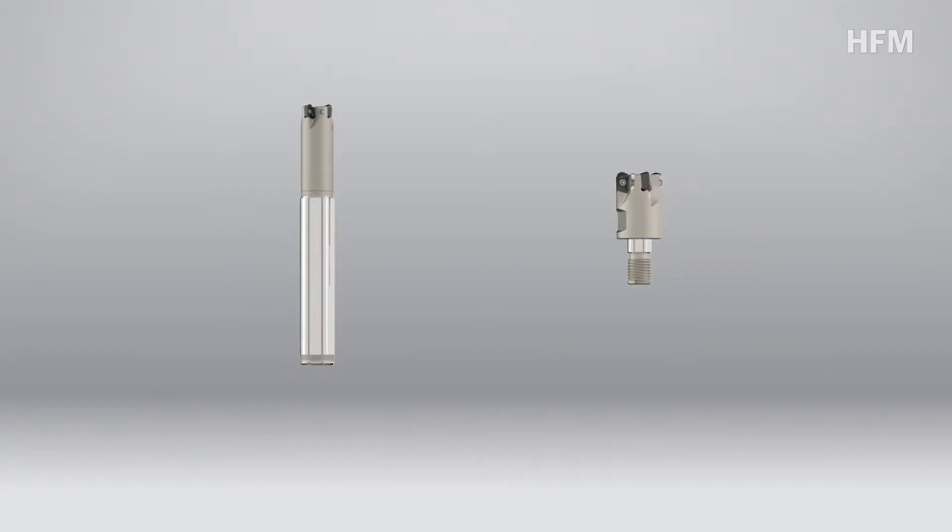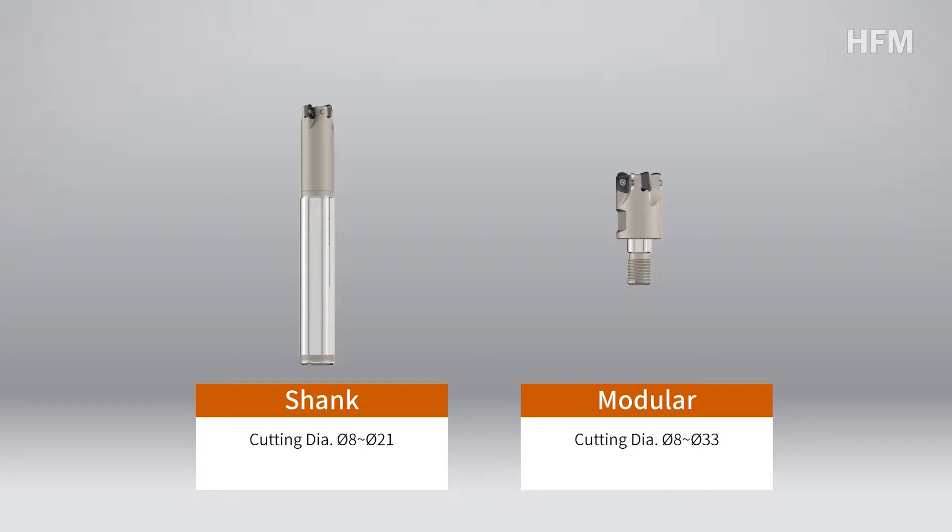HFM's holder is composed of shank and modular. Shank has lineup from 8PI to 21PI, while modular has lineup from 8PI to 33PI.